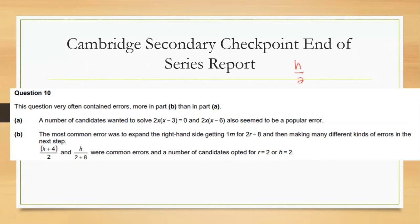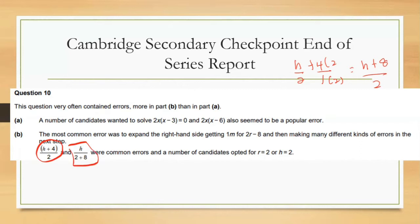From the end-of-series report: for factorization, a common error was trying to solve 2x(x minus 3) equals 0, or writing 2x(x minus 6) as a popular error. For Part B, the most common error was expanding to 2R minus 8 and then making errors in the next step, such as getting h/4 divided by 2. The correct answer is h/2 plus 4, which is equivalent to (h plus 8)/2. Students must ensure the denominator is consistent when combining terms.